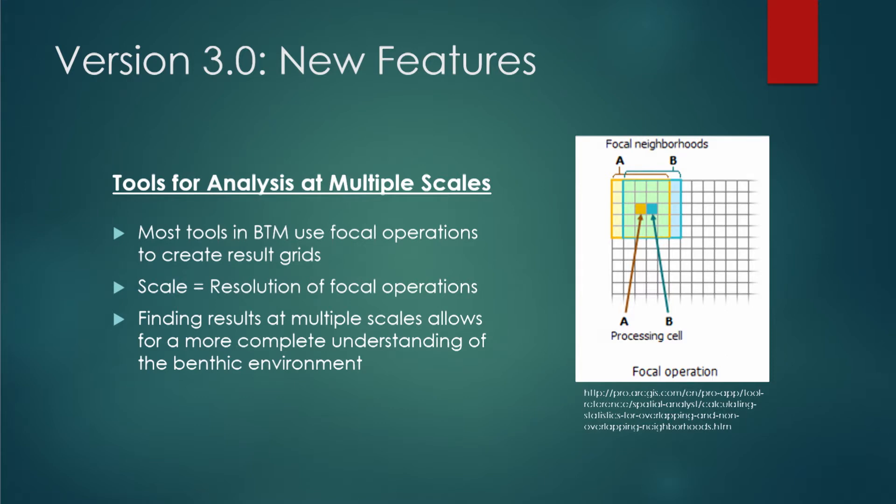One of the things we emphasized for this new release was the capacity to work with benthic data at multiple scales. A lot of the tools in BTM produce result rasters using focal operations, where you're calculating the result value of a cell in a raster by considering all the cells in a certain area around it. As you can see in this image, we have a five by five square that encompasses your focal processing cell, and so values from all those cells are considered when you calculate a statistic or other metrics. Many tools in the older versions usually only work with one scale at a time, so if you wanted to analyze terrain data over multiple scales, you had to do it manually and it would be a laborious process. By providing support for multiple resolutions, we hope to open up the capability to see patterns that may not be evident at a single scale.